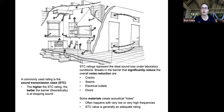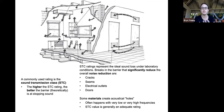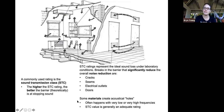There are also STC rating requirements for when you're designing a multifamily house. There are actually code requirements for what the wall rating must be between two different units to help make it a comfortable acoustic space. STC ratings represent the ideal sound loss under laboratory conditions — they develop these numbers in labs where everything is controlled. In the real world, it might be a little different, but it's a good basis for understanding what the sound is going to be like.